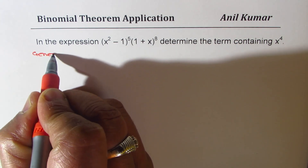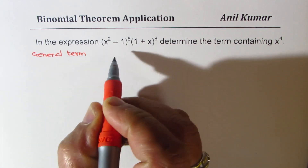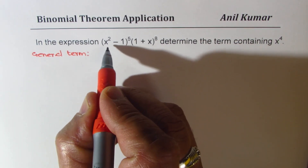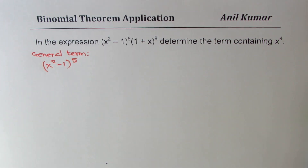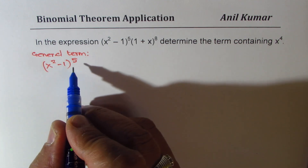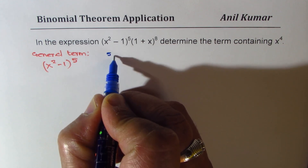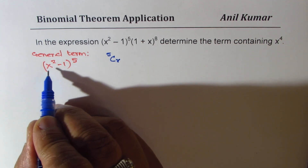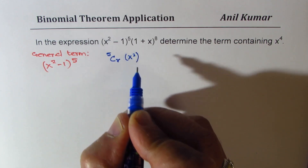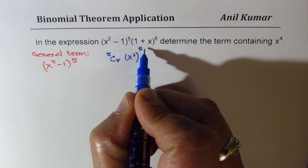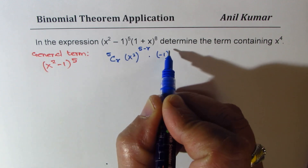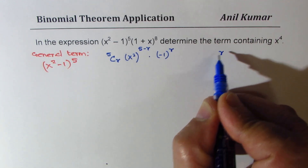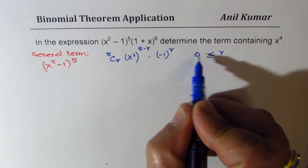Let's find the general term for the expression (x² - 1)^5. The general term for this will be 5Cr × (x²)^(5-r) × (-1)^r, where r has values between 0 and 5.